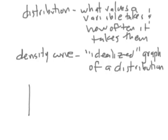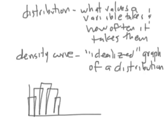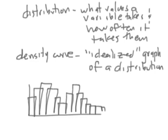Imagine we made a histogram of some test scores that looked a certain way. A density curve has to do more with the population. So what you might say is: for the entire population, you draw a smooth curve on top of the histogram, and the density curve looks like that. A density curve is always smooth and represents the entire population.